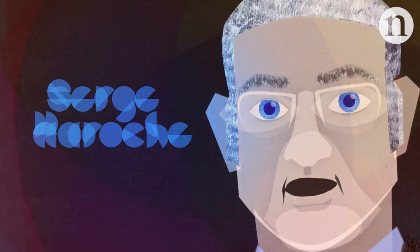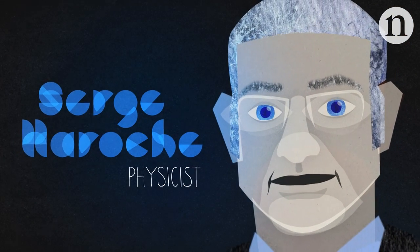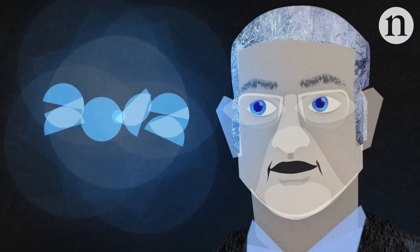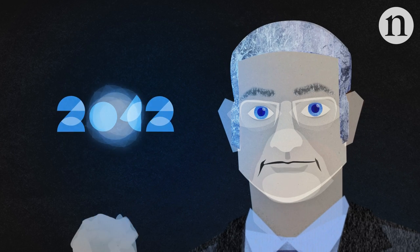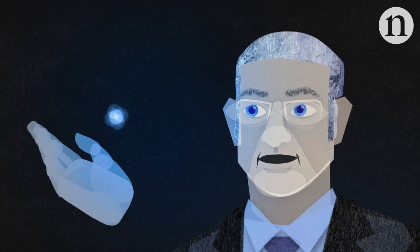Okay, so my name is Serge Aroche and I'm a physicist. I got the Nobel Prize in 2012 and it was for the manipulation of individual quantum systems.